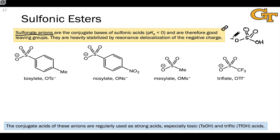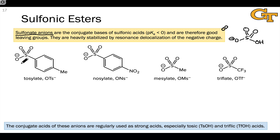This negative charge that appears in the conjugate base is delocalized over both of the other oxygen atoms. The same kind of effect is operating in the sulfonate anions, and explains why these are the conjugate bases of strong acids.